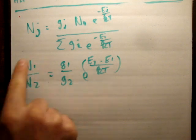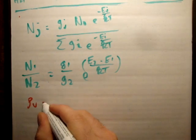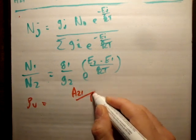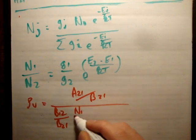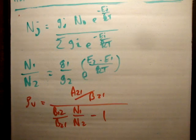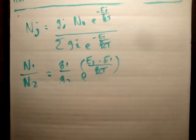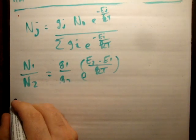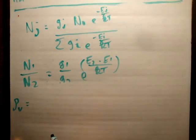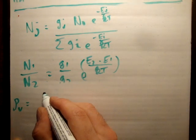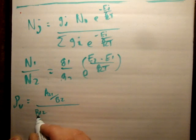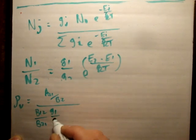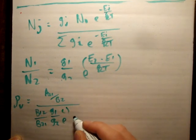We can see that we need to plug this value into our energy density expression. The energy density per unit frequency interval equals A21/B21 divided by (B12/B21 · g1/g2 · e to the (E2 minus E1)/kT minus 1).